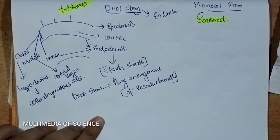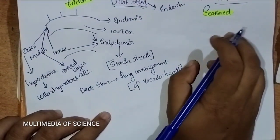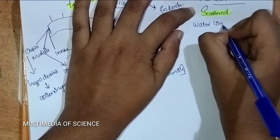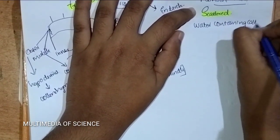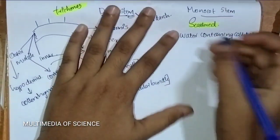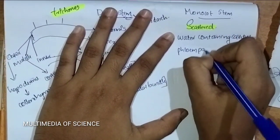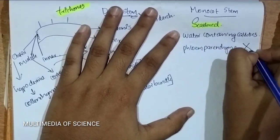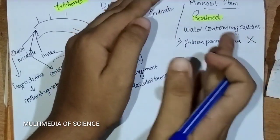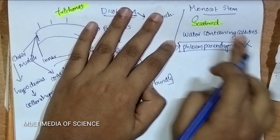That is the main difference between Dicot stem and Monocot stem. In Monocot stem, water-containing cavities are also present. An important point: phloem parenchyma is absent in Monocot stem. It is better described in the NCERT section and should be memorized. Phloem parenchyma is not present in Monocot stem.